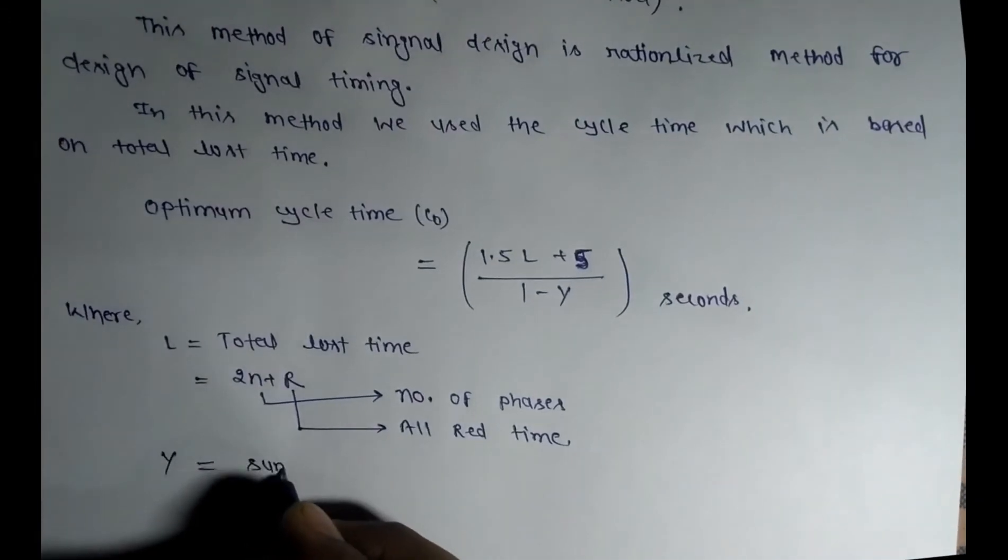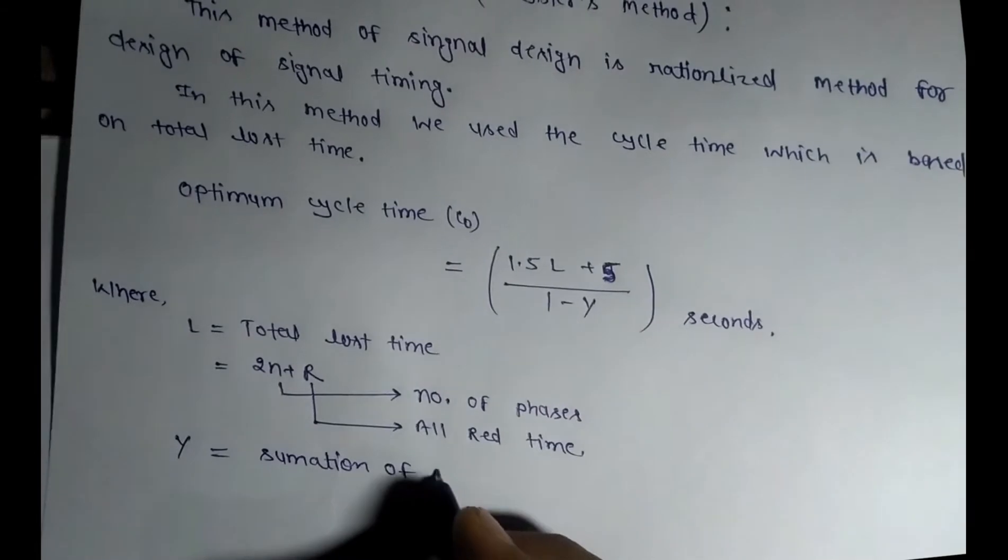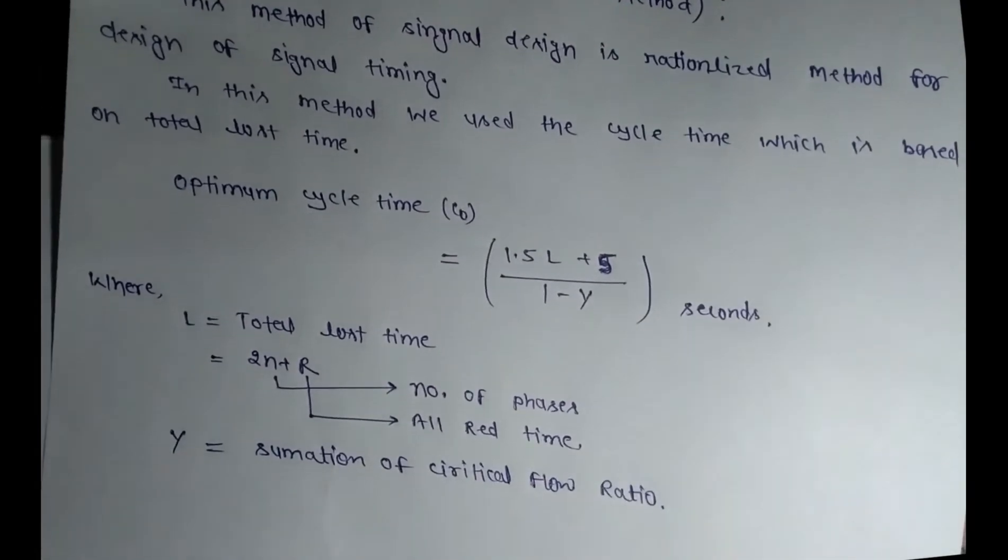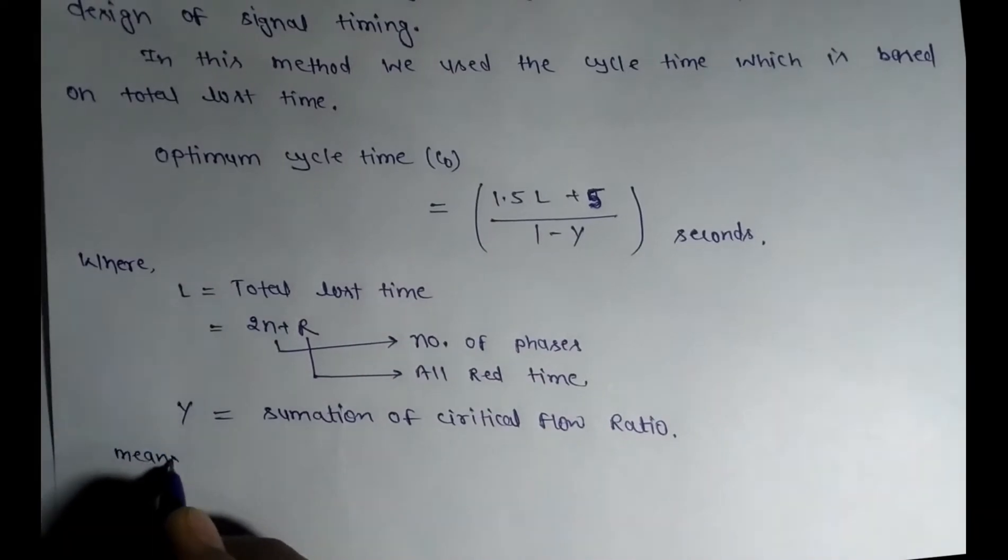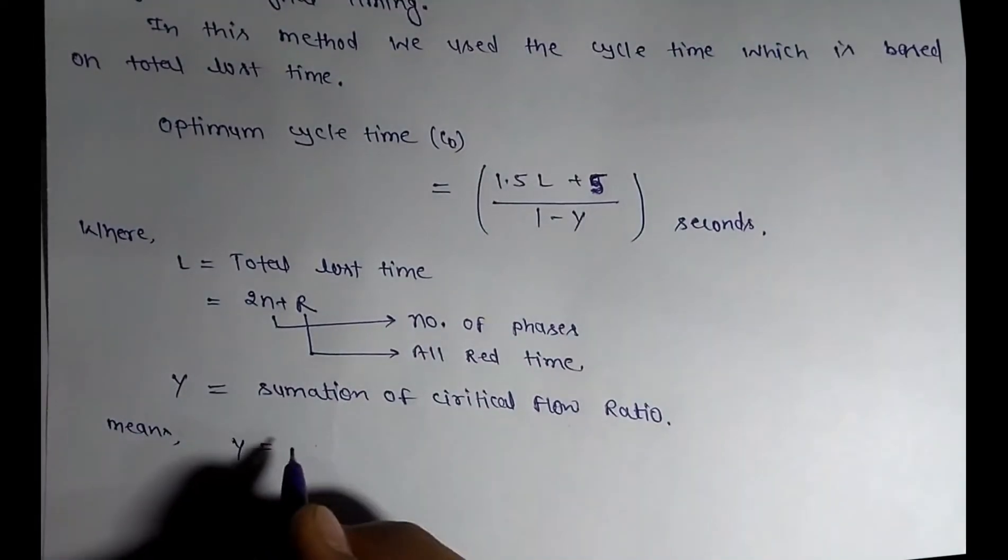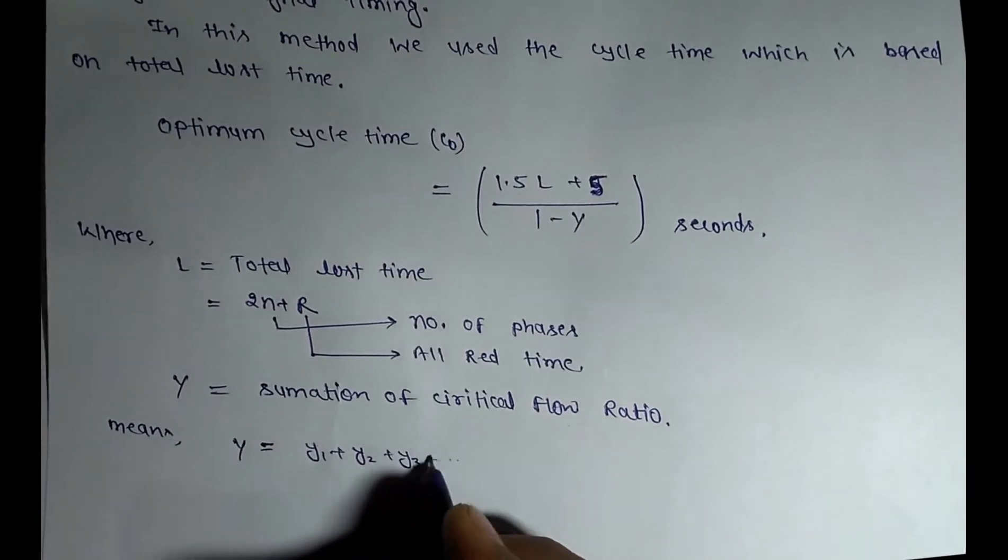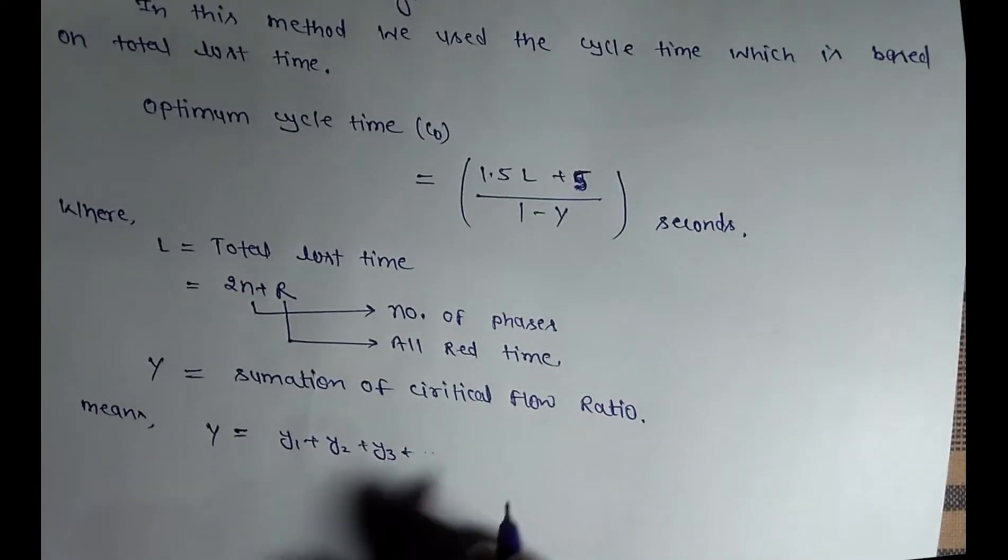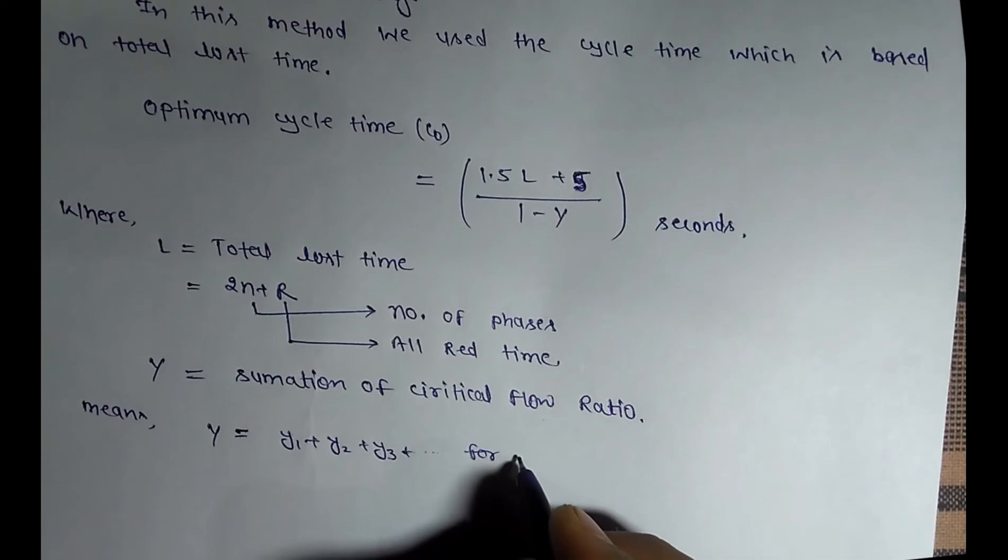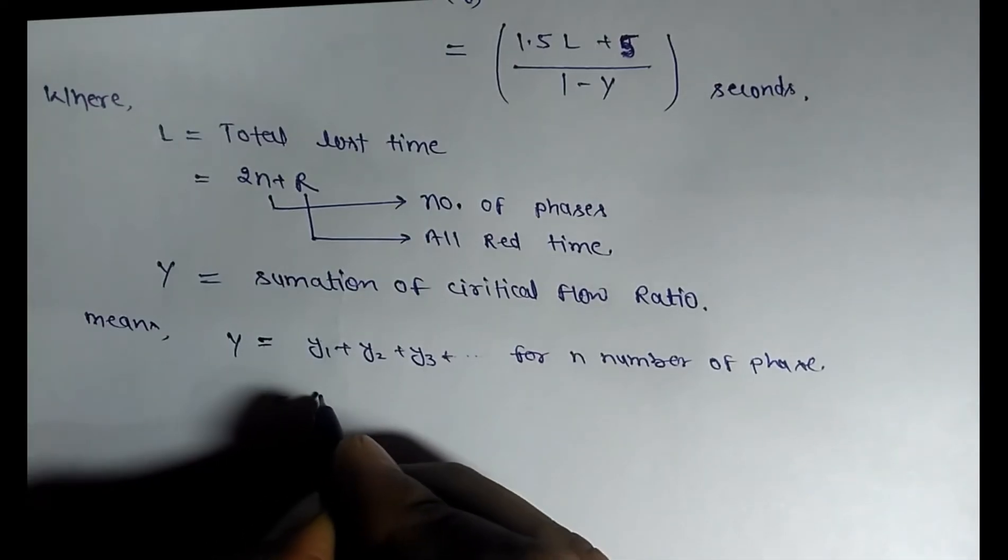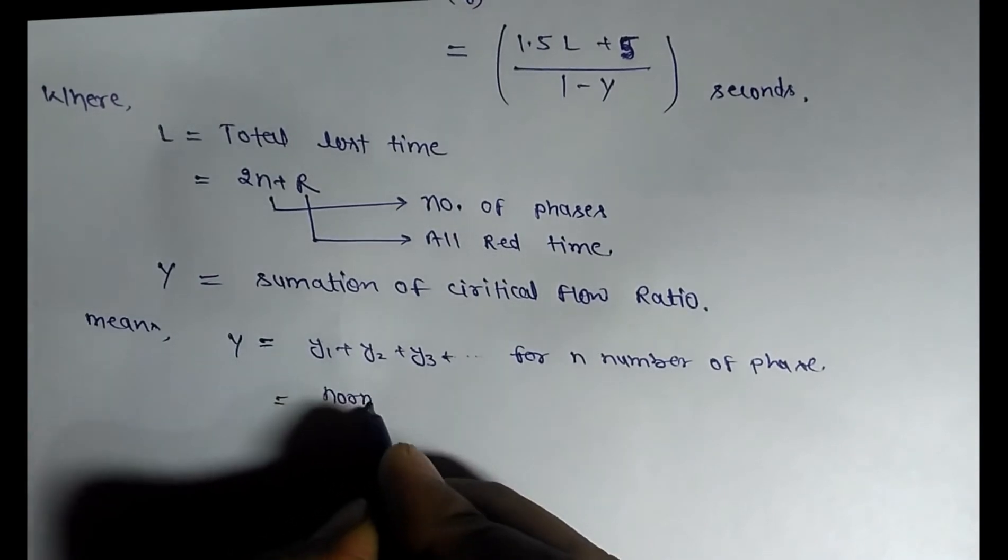In our formula, Y is the summation of critical flow ratio, meaning Y = Y1 + Y2 + Y3 + ... for N number of phases. We can calculate Y1 and Y2 by dividing normal flow by saturation flow.